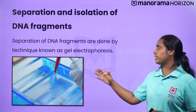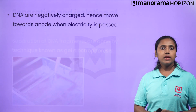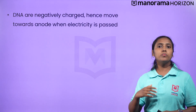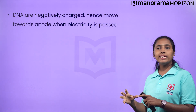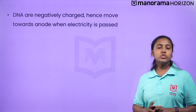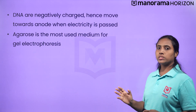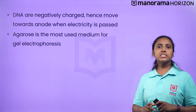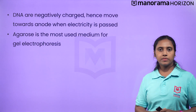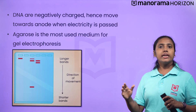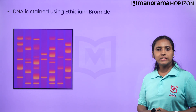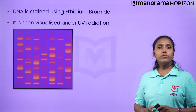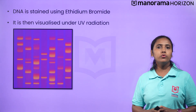Separation is done using gel electrophoresis. DNA fragments are negatively charged molecules that can be separated by forcing them to move towards the anode under an electric field through a medium. The most commonly used medium is agarose, a natural polymer extracted from seaweeds. The DNA fragments are separated based on their size — if the fragment size is small, it moves farther. Once separated, the DNA is stained using a compound known as ethidium bromide and visualized under UV radiation.